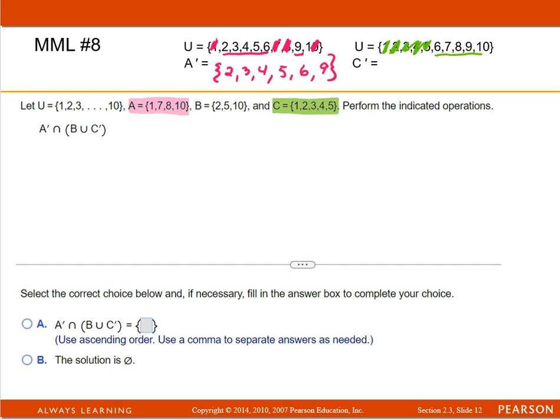And what I'm left with is all these numbers. So the complement of C would be 6, 7, 8, 9, and 10.